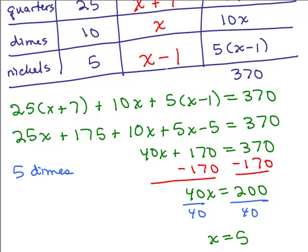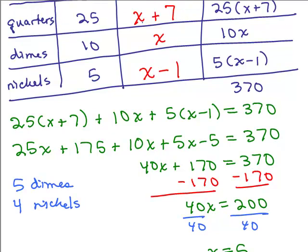I've got one less nickel than dimes. So I must have 4 nickels, right? And what else do I have? I've got 7 more quarters than dimes. So if I had 5 dimes, I've got 12 quarters. So it looks like this is going to be the answer right here.